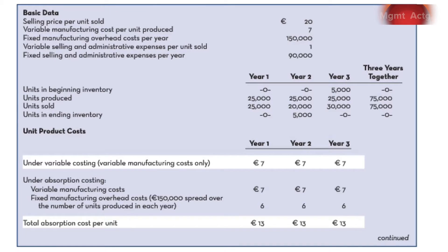Our third learning objective is to reconcile variable costing and absorption costing operating incomes. To do that, we're going to need a working example. The textbook offers a good working example that we're simply going to stick with and use rather than come up with something new.